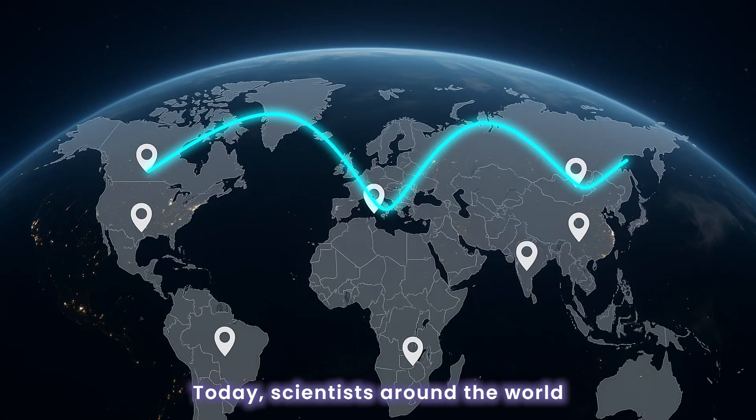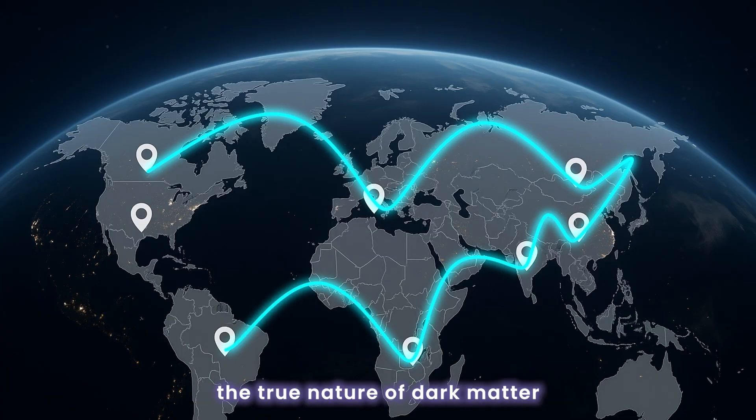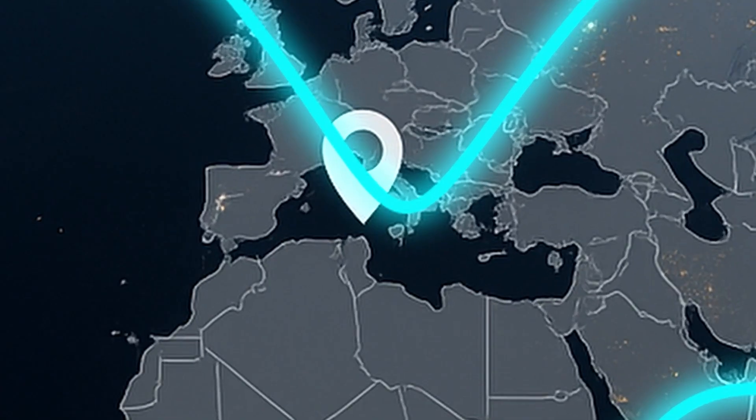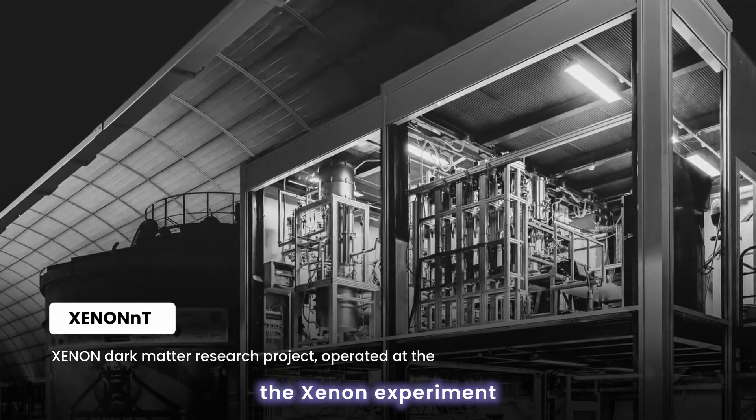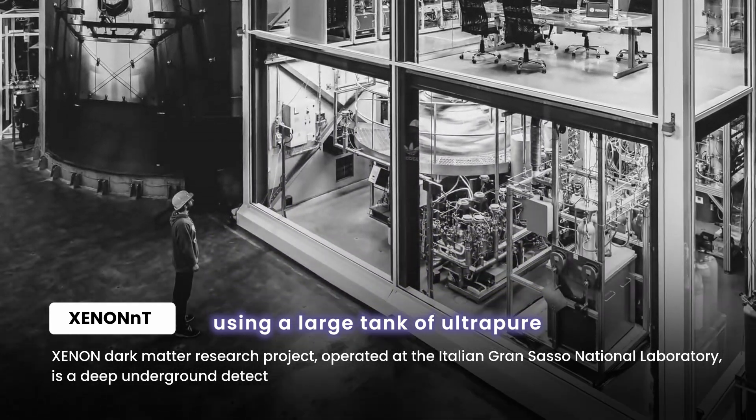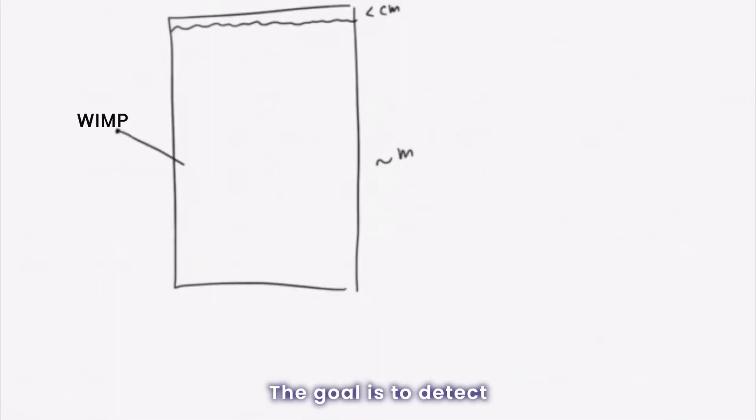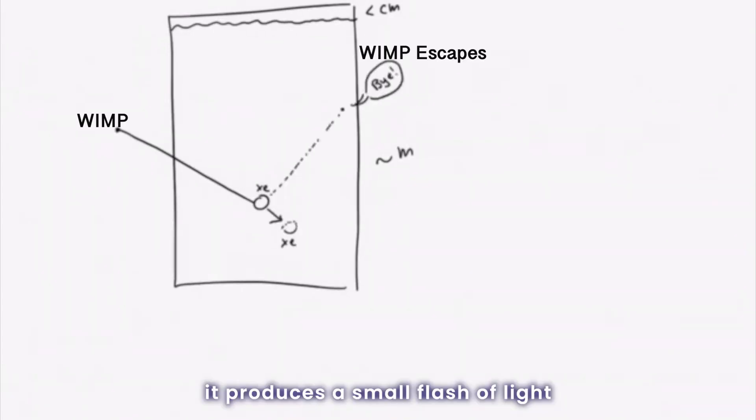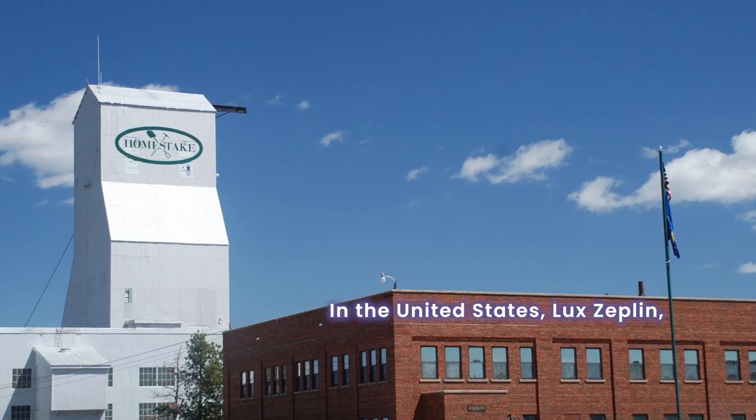Today, scientists around the world are working to uncover the true nature of dark matter using different approaches. In Italy, the Xenon-NT experiment sits deep underground using a large tank of ultra-pure liquid xenon. The goal is to detect dark matter particles directly. If a particle collides with a xenon atom, it produces a small flash of light and a tiny electrical signal.